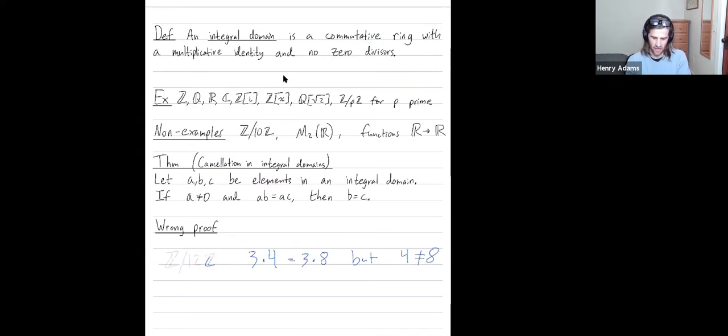Example integral domains are the integers, the rationals, the reals, the complexes. The Gaussian integers are an integer domain. Polynomials are an integral domain. The rationals adjoin the square root of 2. Z mod pZ is an integer domain if p is prime. Any field is certainly an integral domain.